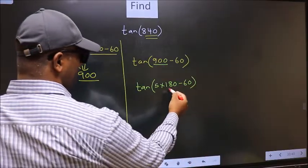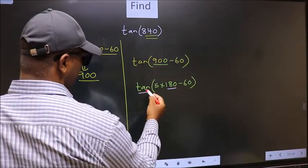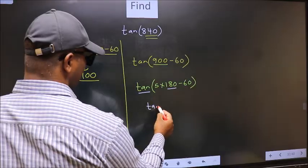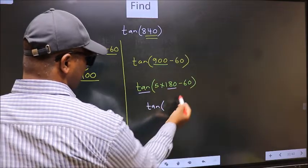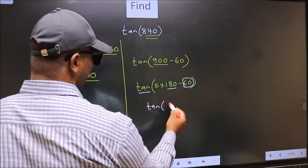Next, here we have 180, so tan is not going to change. It will remain tan, and inside we get this angle 60.